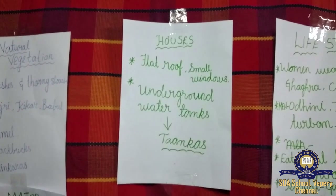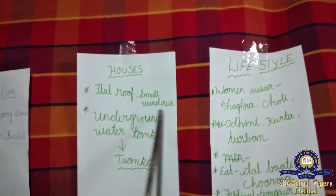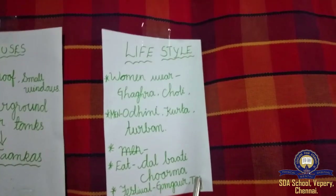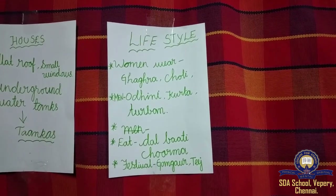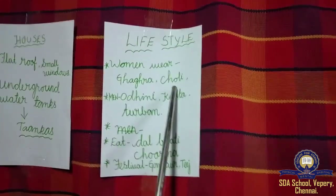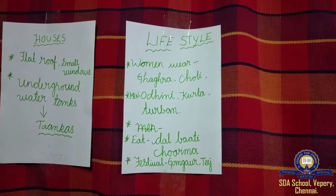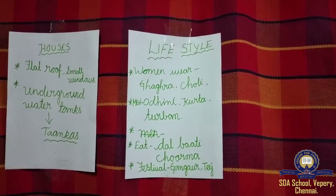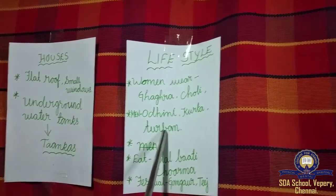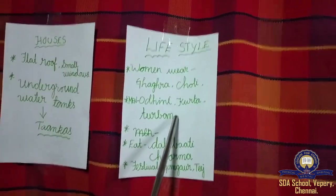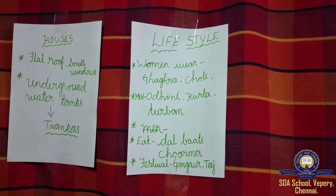The underground water tanks are called tankers. This is how people get water for their daily needs. The houses are built in a way that keeps them cool and prevents them from feeling too hot. Regarding lifestyle, women wear gagra choli and dhoni, and men wear kurta and dhurban.